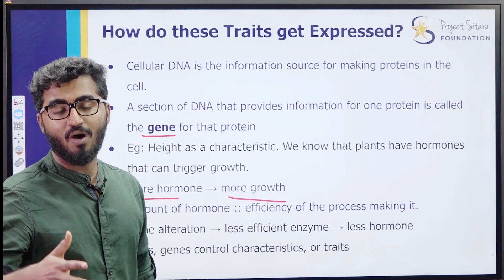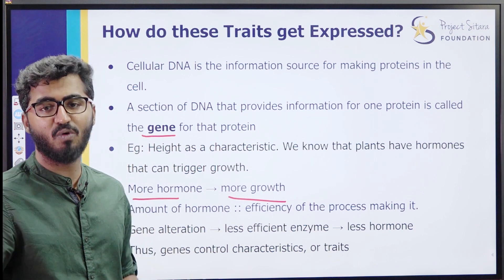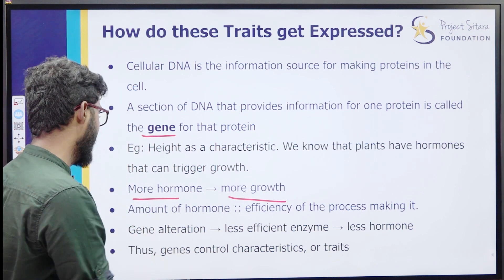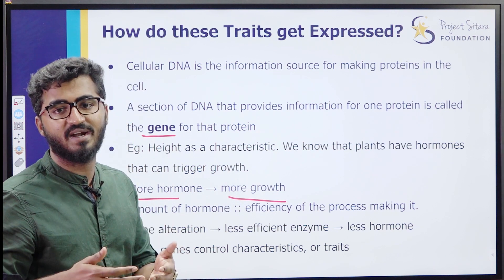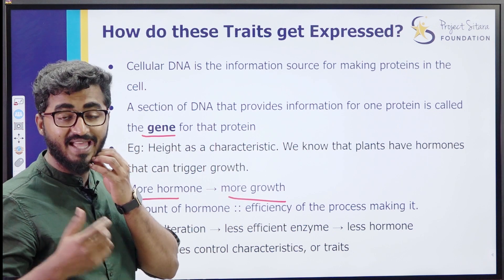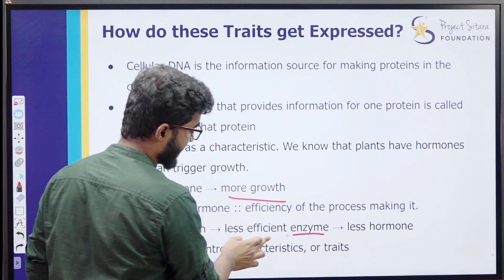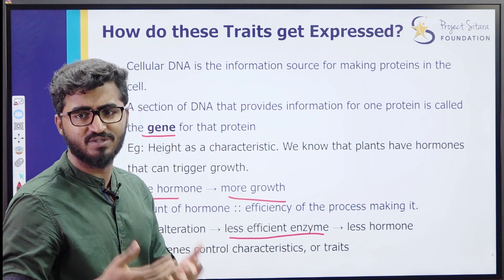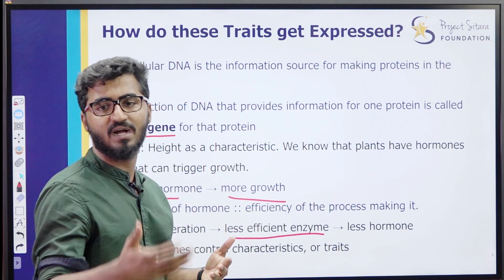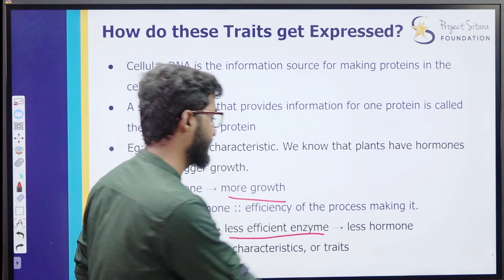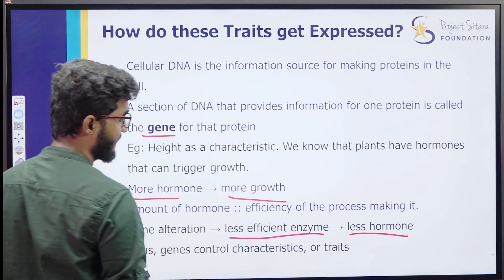So if a hormone is needed, the process that produces that hormone must be efficient and work properly. Now if there is a gene alteration, the enzyme that creates that hormone is affected. The gene alteration causes a less efficient enzyme to be produced, so the process doesn't work well and less hormone is produced.